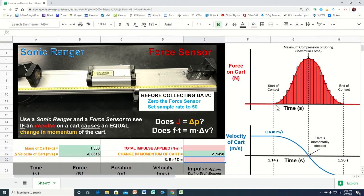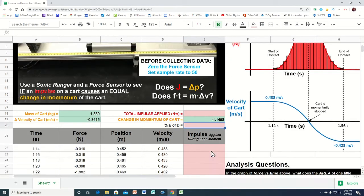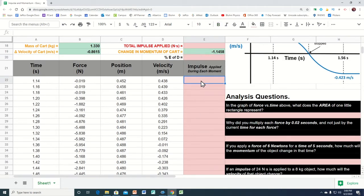So force times time would calculate how much impulse there was at that moment. And then force times time would be the impulse at the next moment. And we're just going to keep track of all the little impulses over each moment. And that's what we're going to do here.